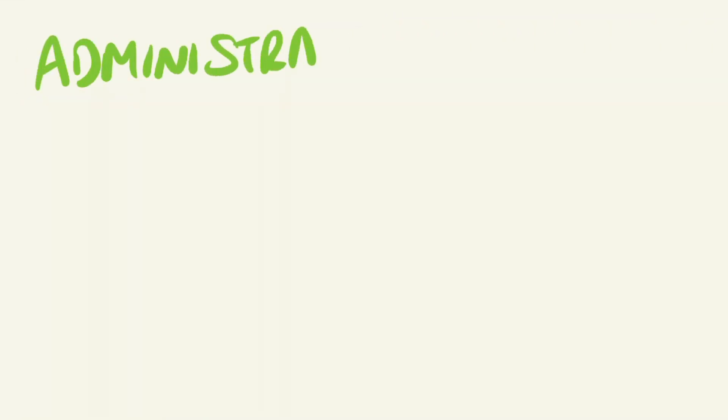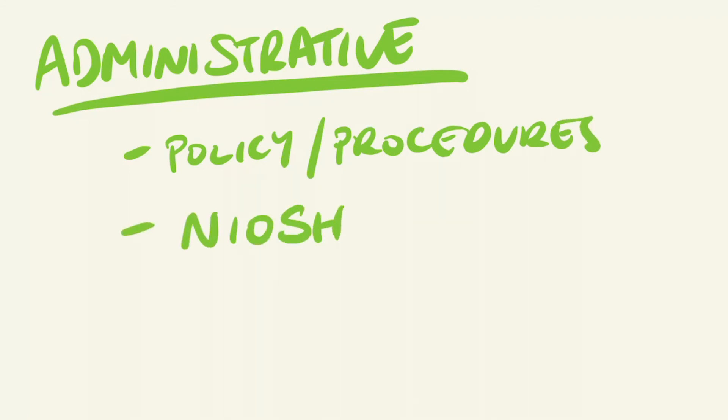Administrative controls. These controls involve implementing changes to work policies and procedures in order to minimise the hazard. One particular example is for the workplace to adopt the recommended NIOSH lifting guidelines. Reviewing work schedules to ensure sustainable workloads, regular rotation of roles and rest breaks. As well as implementing education and training for the workers.